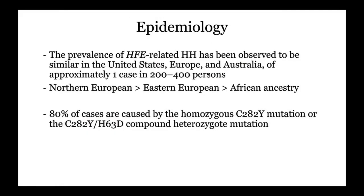The prevalence of HFE-related hemochromatosis is similar across the U.S., Europe, and Australia — about 1 in 200 to 400 cases. It's mainly seen in northern European descendants and less common in African ancestry. 80% of hereditary hemochromatosis is caused by the homozygous C282Y mutation in the HFE gene. Other mutations can cause a compound heterozygote — where you have the driver mutation C282Y combined with another mutation such as H63D.